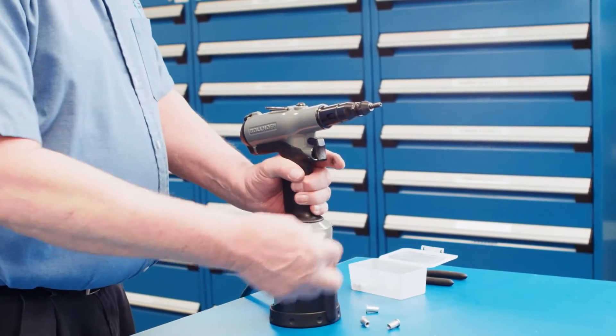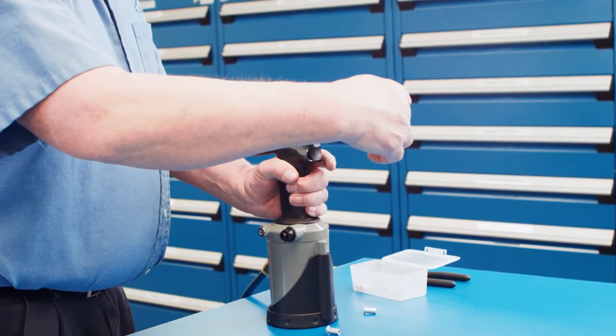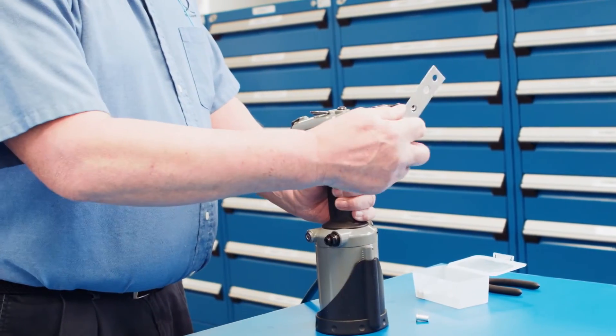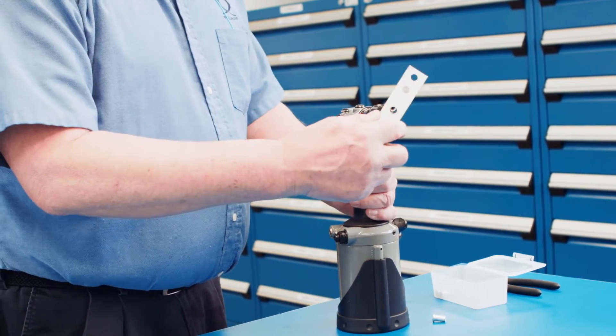Once the P2007 correctly upsets the rivnut, make sure you test it in sample material the same thickness as your production material. Run a few samples in your test material.